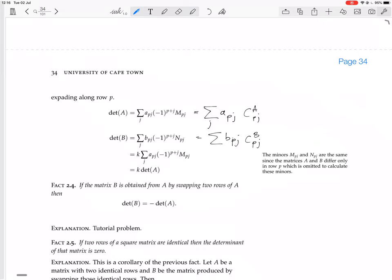We multiplied row P of matrix A by k, so B_Pj is always k times A_Pj. B_Pj equals k times A_Pj. So we can factorize out the k from all of the terms.